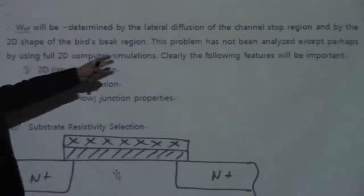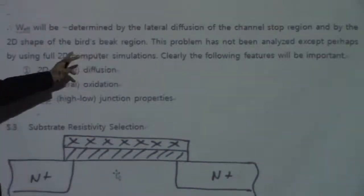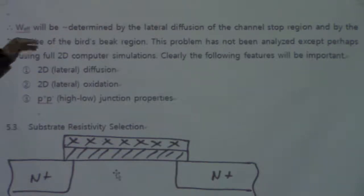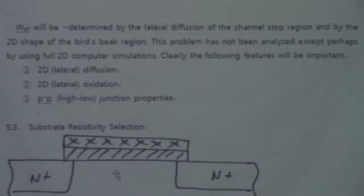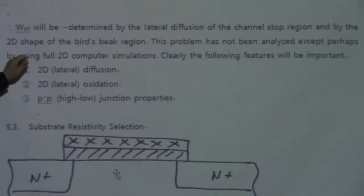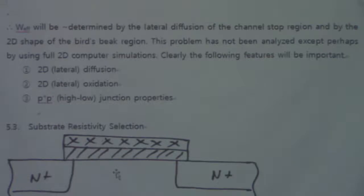The bird's beak — related to the slope alpha — and the width effect discussion: the threshold voltage sensitivity to geometry due to the bird's beak has to be controlled. This problem has not been fully analyzed except perhaps by using full 2D numerical simulators. Such numerical 2D simulators are available.